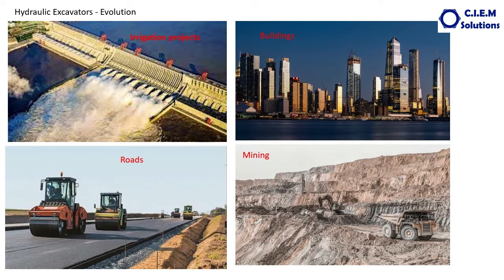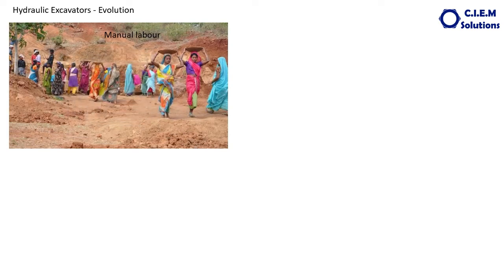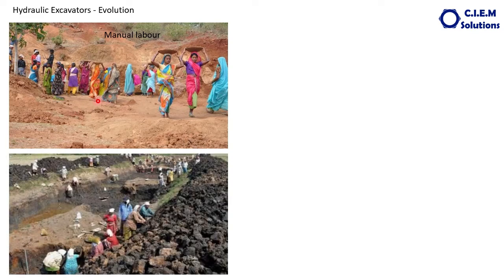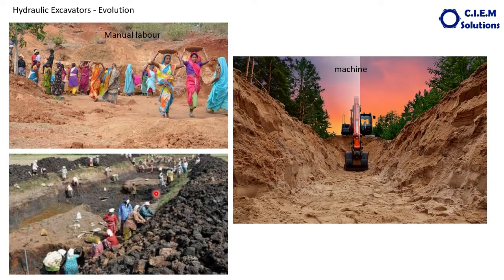So how were these jobs done in the past? The complete excavation jobs were performed purely through manual labor. This shows ore being taken out through manual labor, and here workers are excavating a canal through manual labor. As time progressed, we are now doing all this excavation work with a machine called the hydraulic excavator. This machine is doing the job of digging an irrigation canal. How did this machine evolve? Let us spend a few minutes on this in the video.